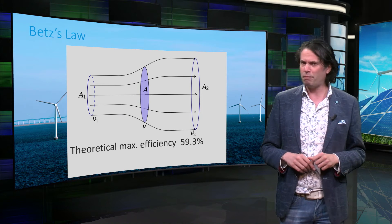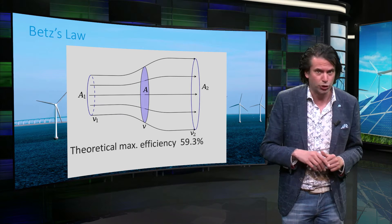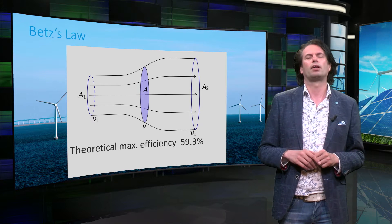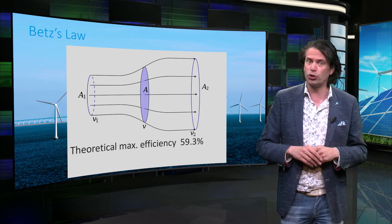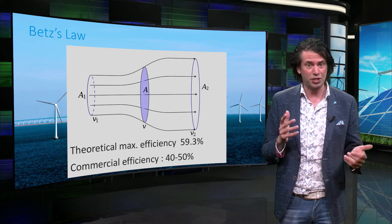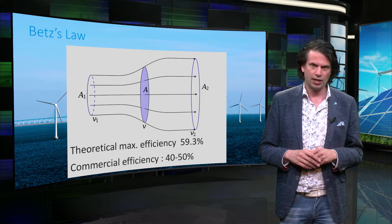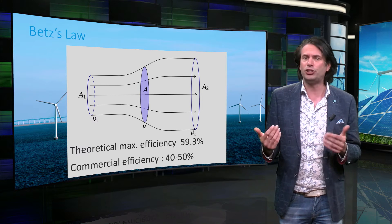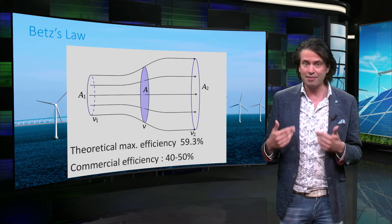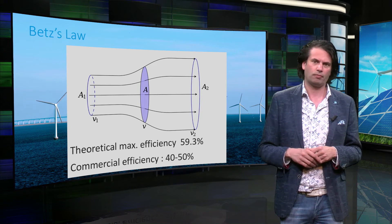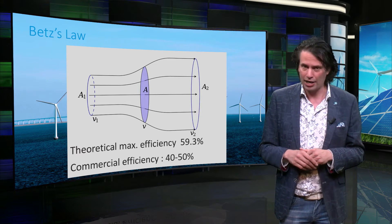This law was found by and named after Albert Betz, a German physicist. In practice, the maximum efficiency of commercial wind turbines is between 40 and 50 percent at ideal wind speeds. This is among other things due to inefficiencies in the power system and the gearbox. The efficiency also drops for low and high wind speeds.